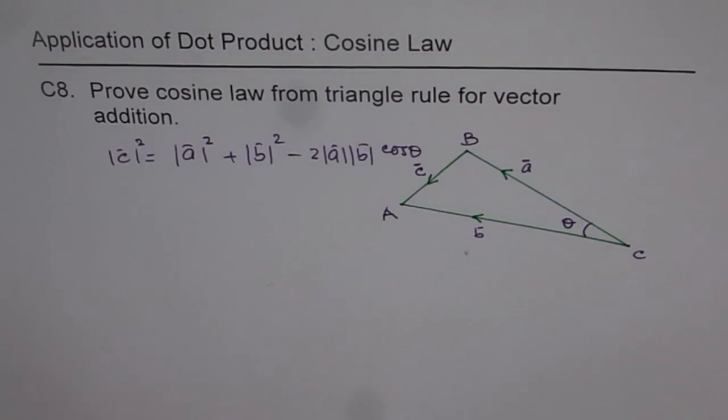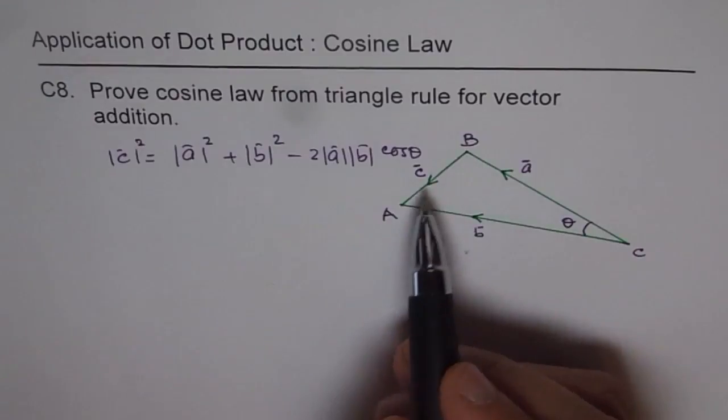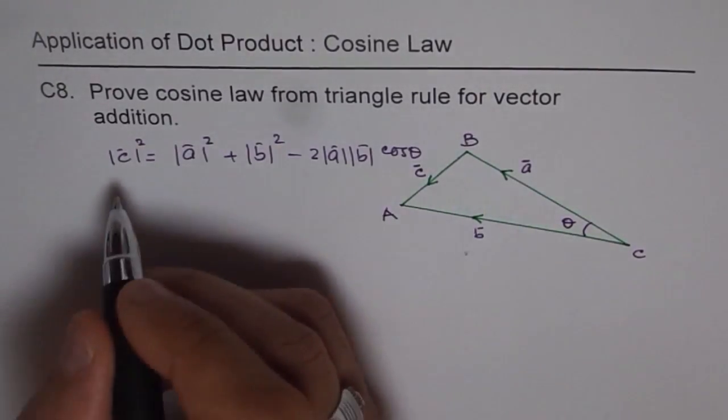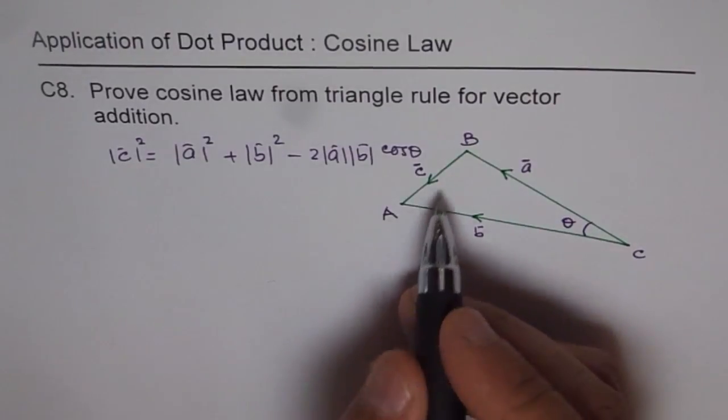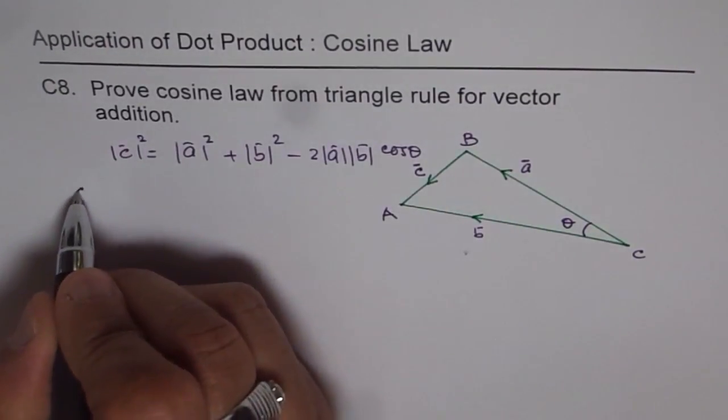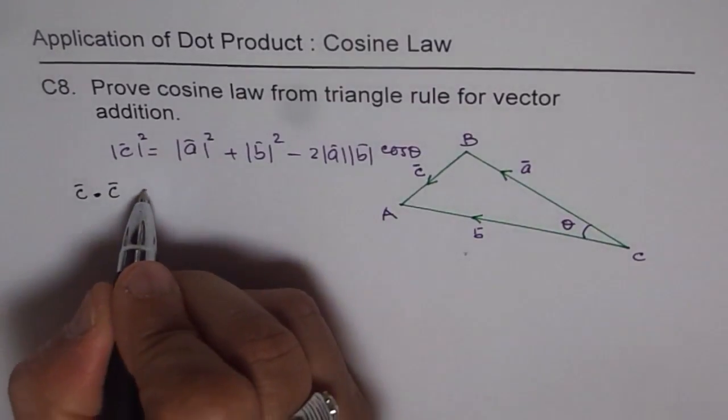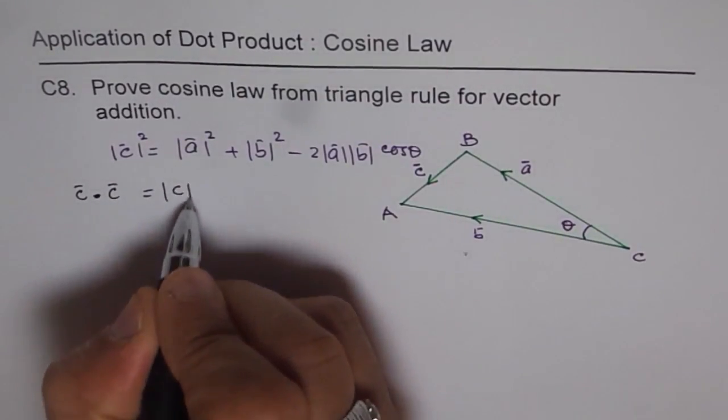Now, let's see what is C square. So we will use dot product to find the C square. As you know, we can get C dot C. C dot C is C square, magnitude C square.